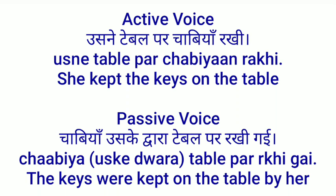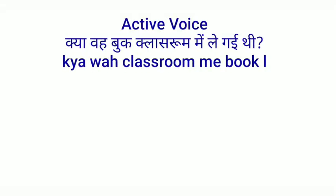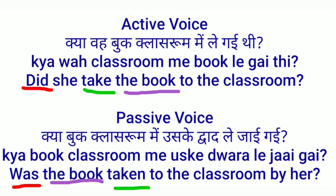'She kept the keys on the table' — passive: 'The keys were kept on the table by her.' Third form of 'keep' is 'kept.' 'She' becomes 'by her.' Remember: was/were + verb third form for Past Simple passive. 'Did she take the book to the classroom?' — passive: 'Was the book taken to the classroom by her?' 'Did' is replaced by 'was,' and 'the book' becomes subject.